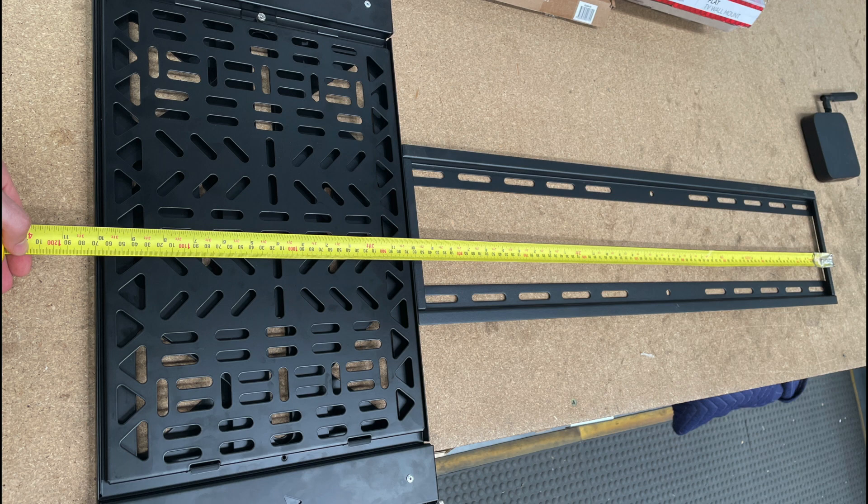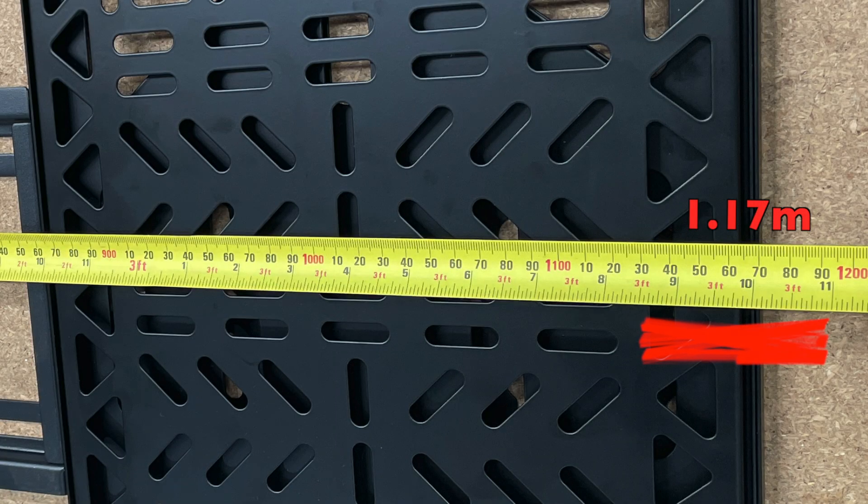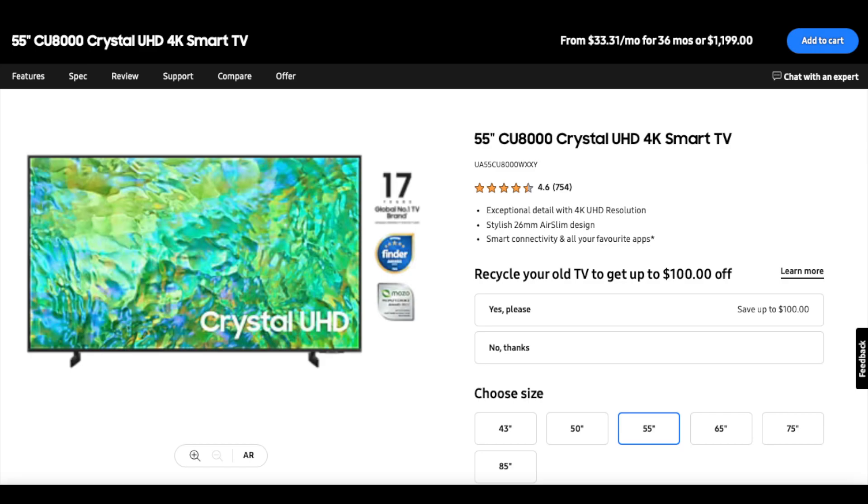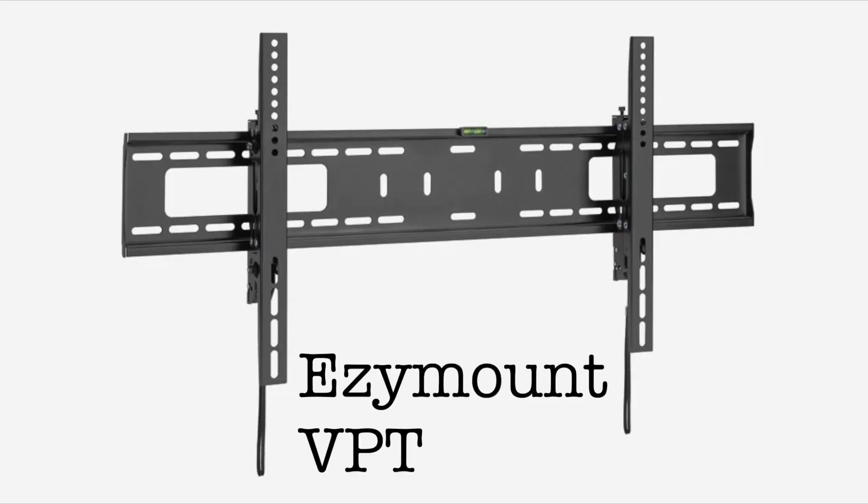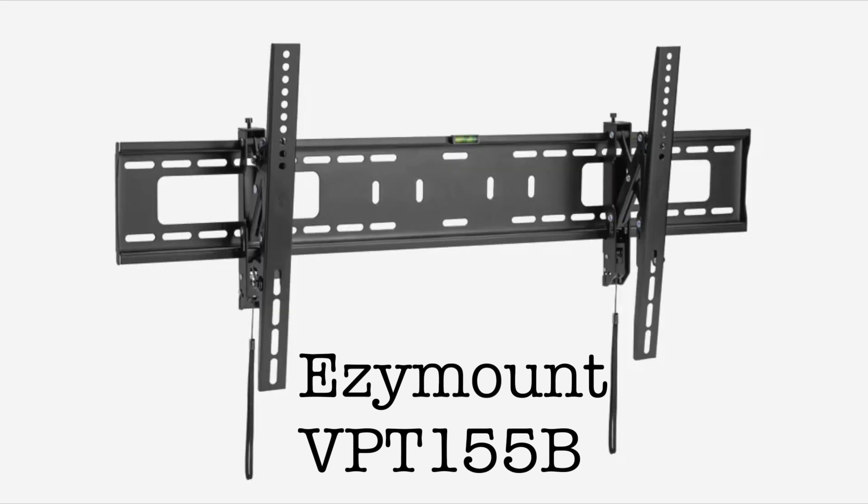Beside that same VBF56 bracket you can see that the total length is under 1.2m. As an example a common 55 inch Samsung is about 1.4m wide. For domestic jobs the EasyMount VPT155B could be the ideal match.